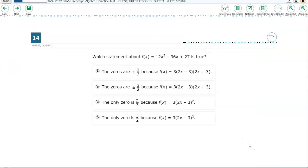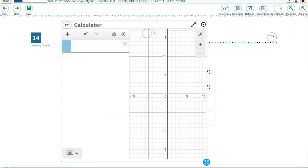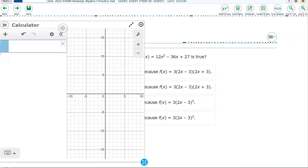And the last item we're looking at in this practice set is item 14. And we're given a function, F of X, and we're asked which of these statements is true. So click on your graphing calculator. Let's move it over.